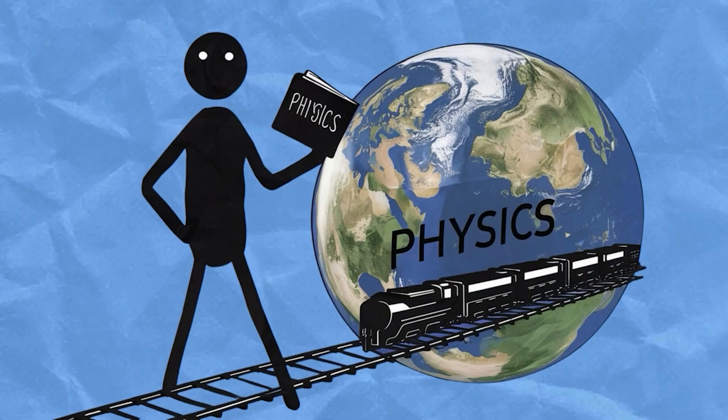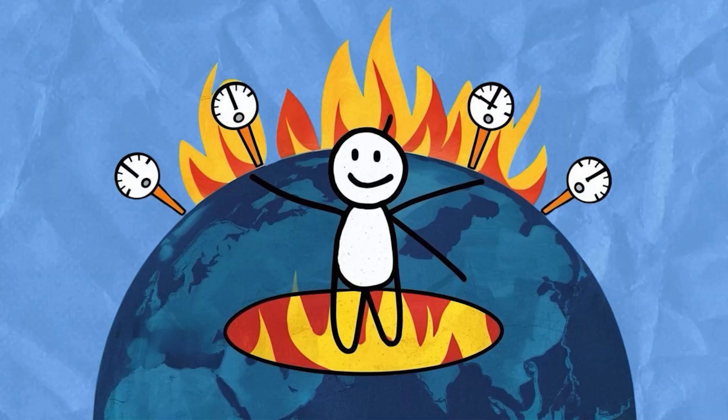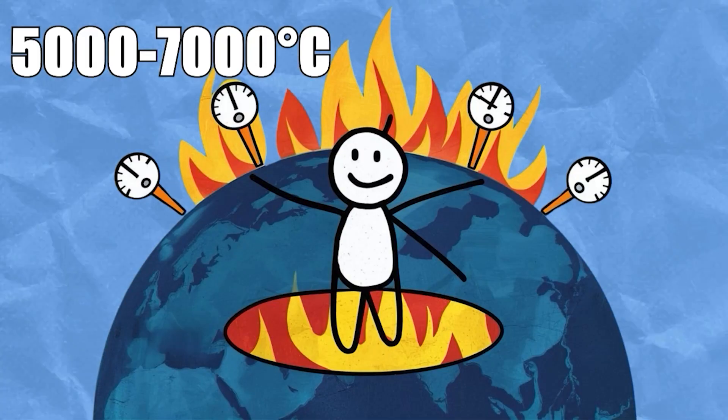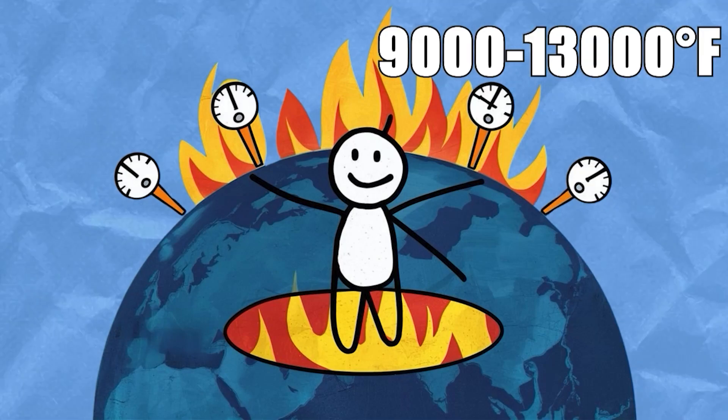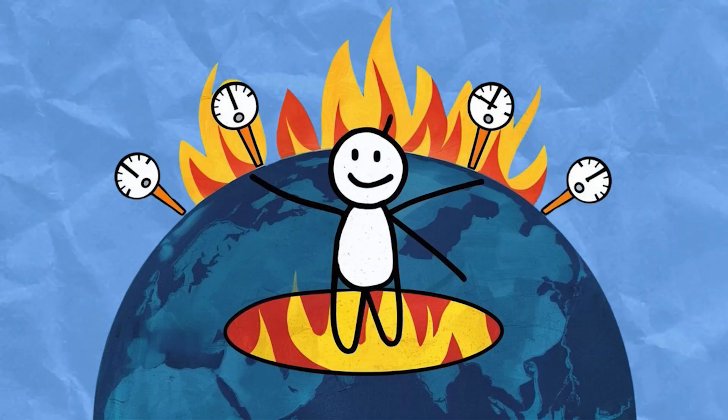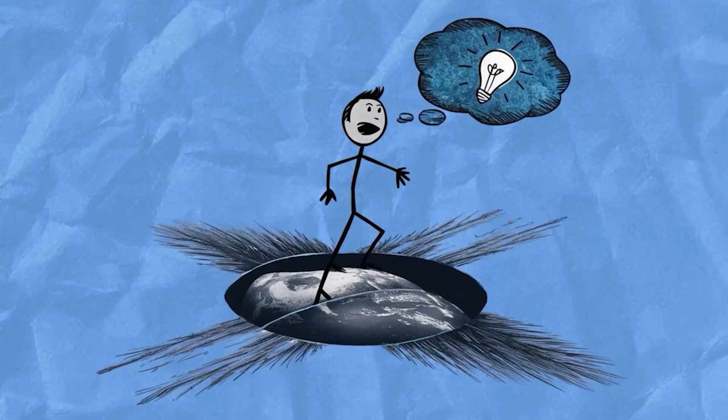Of course, this is all highly theoretical. The temperatures at the centre of the Earth are estimated to be around 5,000 to 7,000 degrees Celsius, or about 9,000 to 13,000 degrees Fahrenheit, which is hotter than the surface of the Sun. Any material or human travelling through this region would be incinerated almost instantly.